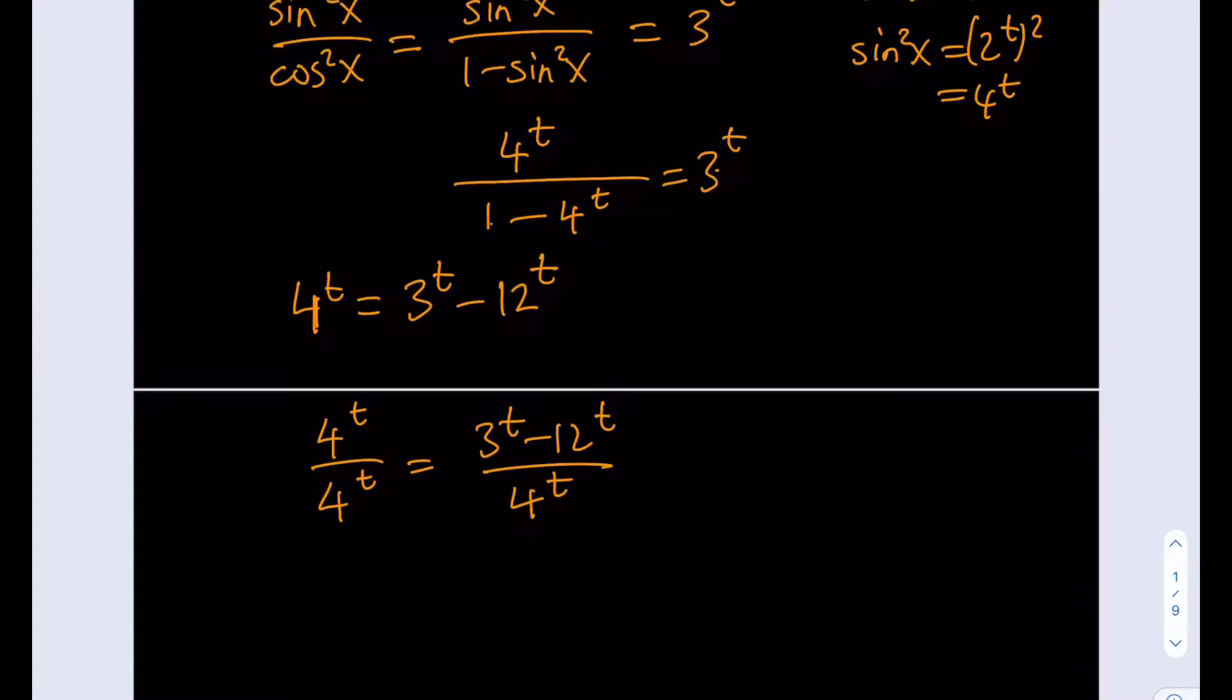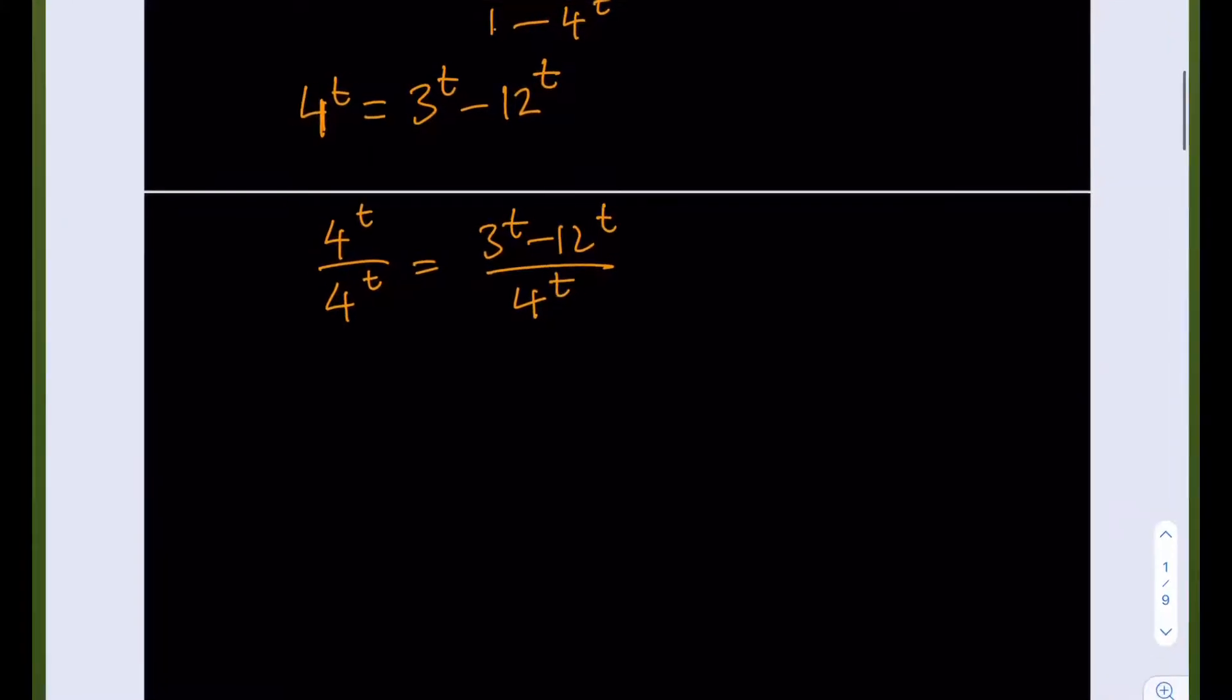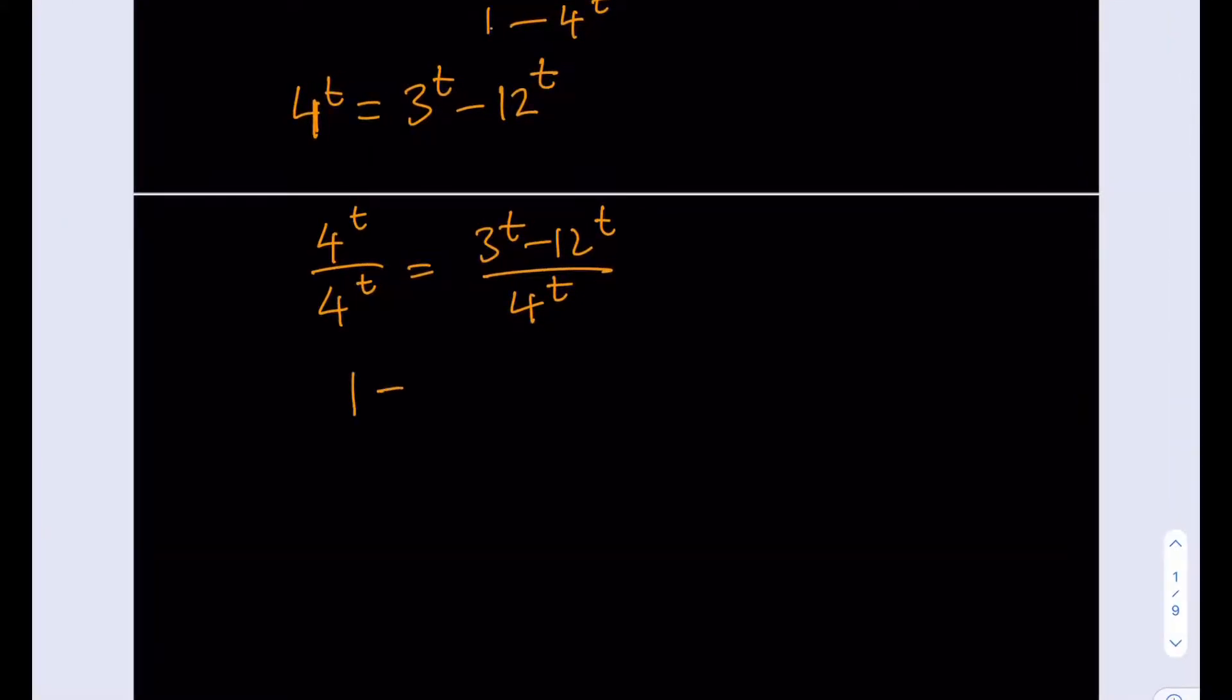Okay, obviously, I'm going to have 1 from the left-hand side, right? That's going to be a 1. And the right-hand side, we're going to get 3 over 4 to the power t because they have the same exponent minus, now they have the same exponent. So I can just divide the bases and that's going to be 3 to the power t.